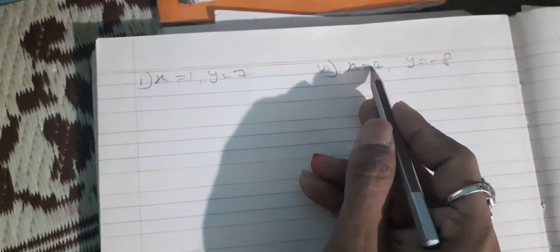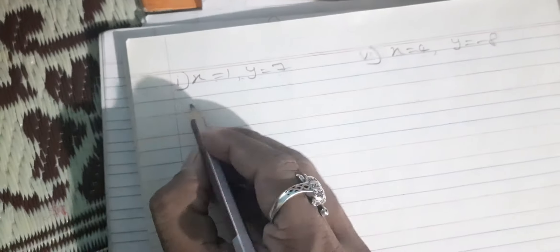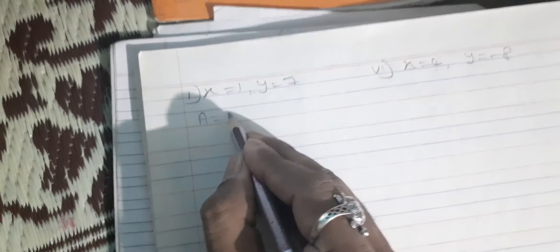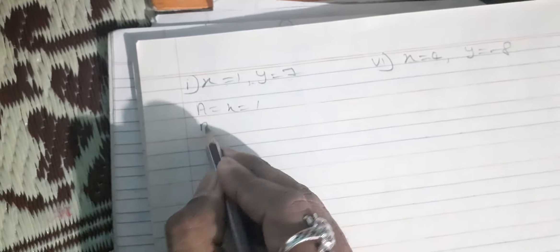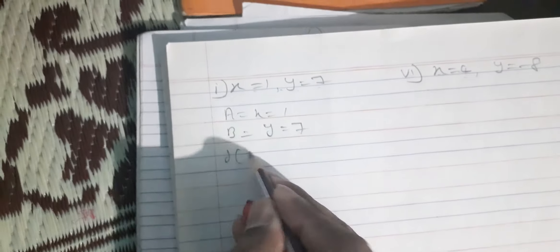Now we have a question: X value is 1, Y value is 7, X value is 4, Y is equal to minus 8. Now we have to solve distance AB. A is equal to X is equal to 1, B is equal to Y is equal to 7. Distance AB.